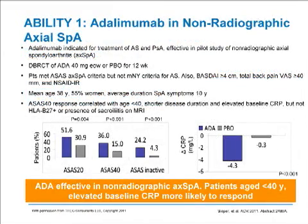All of that is background to an interesting abstract presented at the ACR meeting this year on the ABILITY-1 trial. This was the first large study of a TNF inhibitor — in this case adalimumab — in patients who meet the new criteria for non-radiographic axial spondyloarthropathy. These patients met the new criteria but did not meet the modified New York criteria for ankylosing spondylitis, meaning they did not have radiographic evidence of sacroiliitis. They also had to have active disease with a BASDAI score for back pain and had been inadequate responders to a non-steroidal anti-inflammatory. Adalimumab was significantly more effective than placebo, and the response rates were very comparable to those seen with TNF inhibitors in actual ankylosing spondylitis.